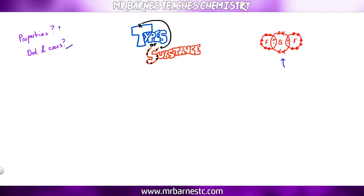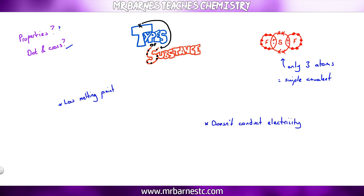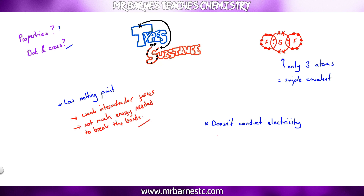Looking at the properties of SF₂ — with only three atoms, one sulfur and two fluorines, it is simple covalent. Simple covalent substances have a low melting point and don't conduct electricity at all. The low melting point is due to weak intermolecular forces, meaning not much energy is needed to break the bonds. It doesn't conduct because there are no delocalised electrons free to move, so it can't carry or pass on a charge.